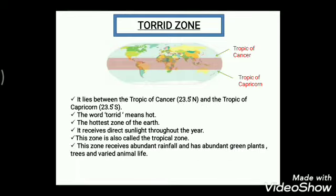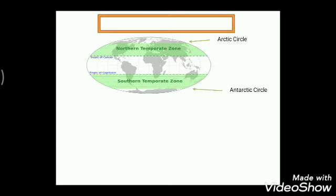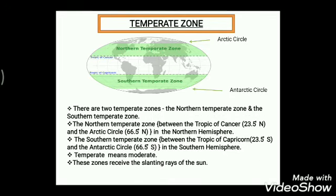The torrid zone lies between the Tropic of Cancer at 23.5° North and the Tropic of Capricorn at 23.5° South. The word 'torrid' itself means hot, so this is the hottest zone of the earth. It receives direct sunlight throughout the year, which is why it is also called the tropical zone. Because it is the hottest region, this zone also receives abundant rainfall and has abundant green plants, trees, and varied animal life.